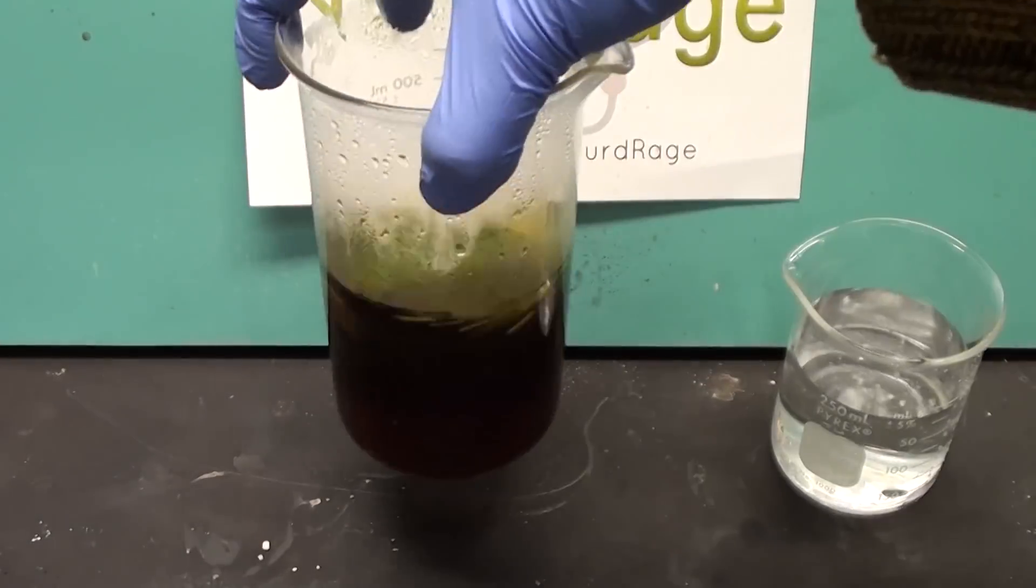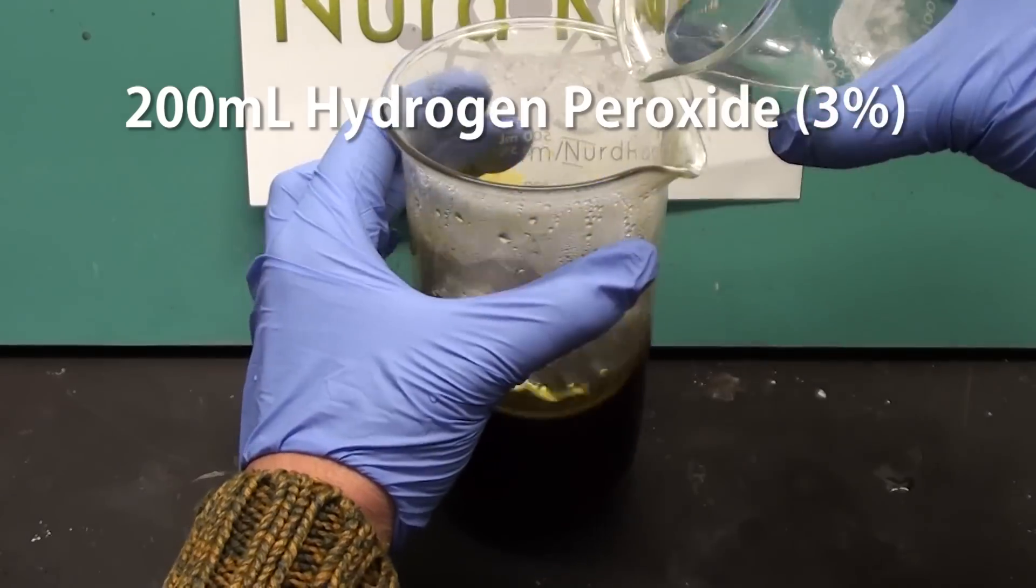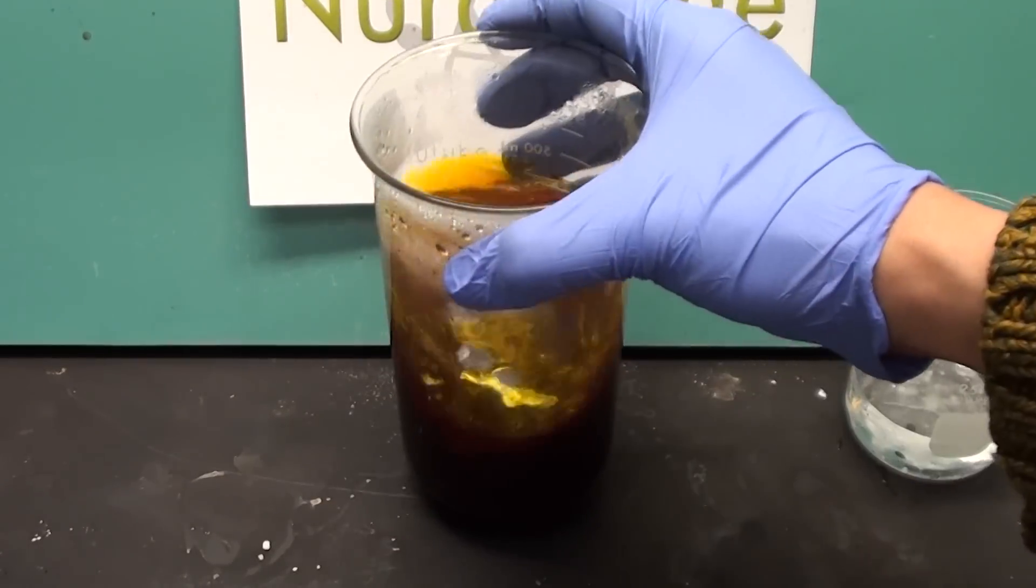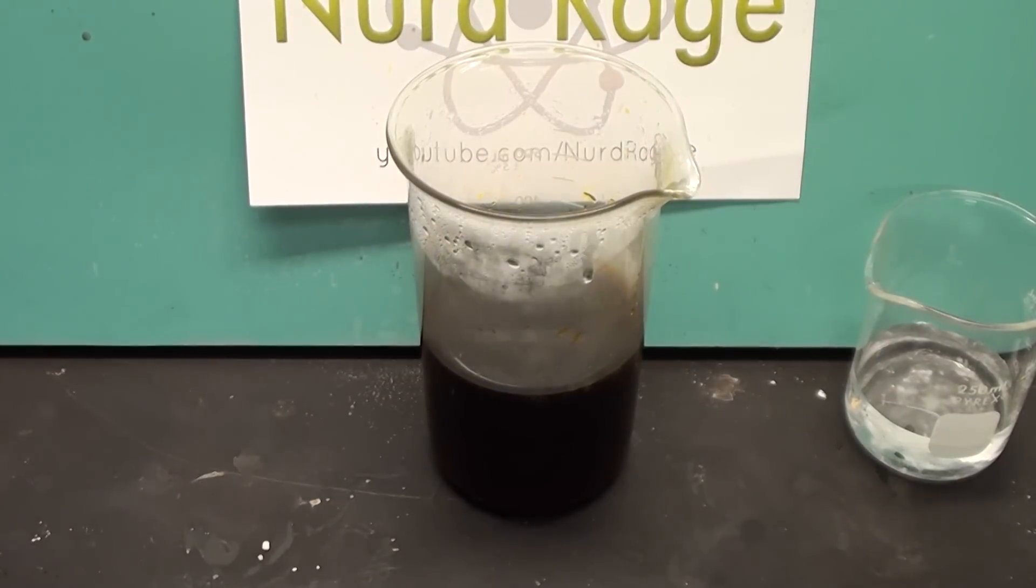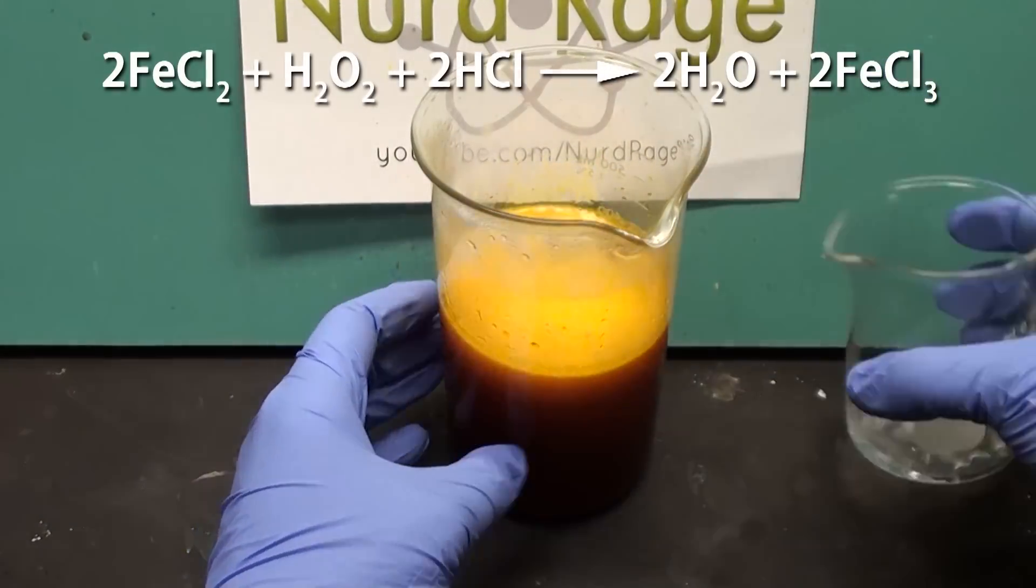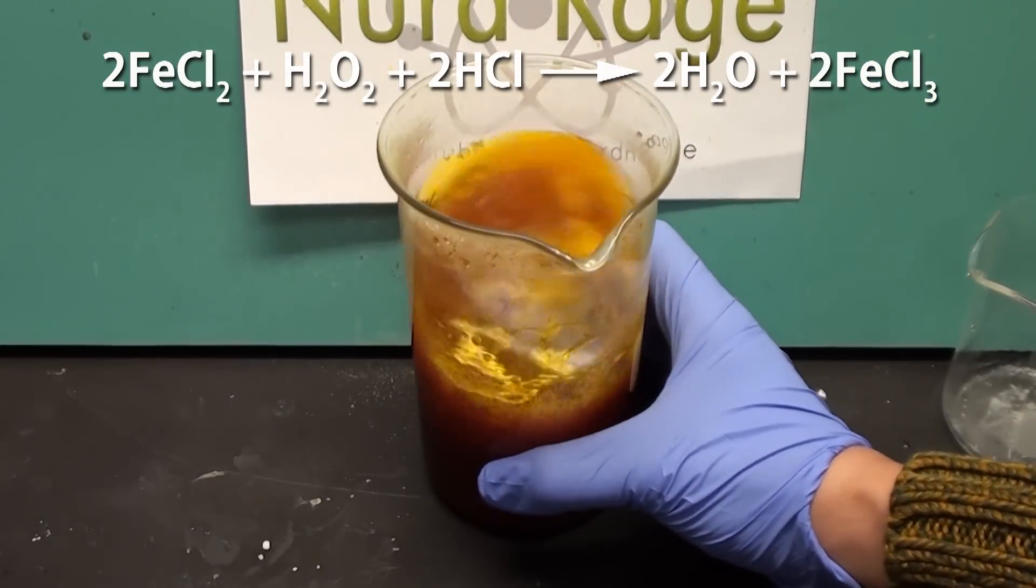Now with lots of stirring, slowly add 200mL of 3% hydrogen peroxide. Do this in small portions since the mixture will heat up a lot. If it gets too hot to hold, slow down and wait for it to cool before adding the rest. What we're doing here is oxidizing the ferrous chloride into ferric chloride.